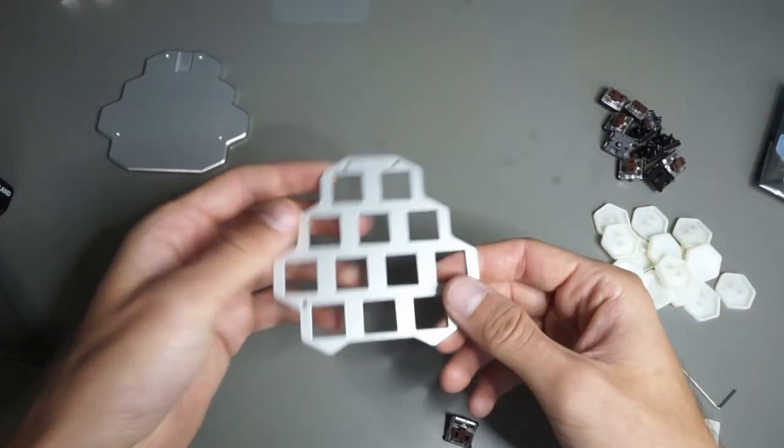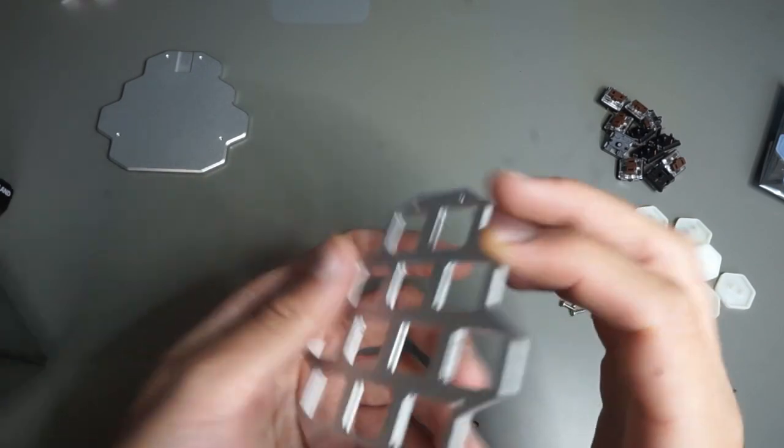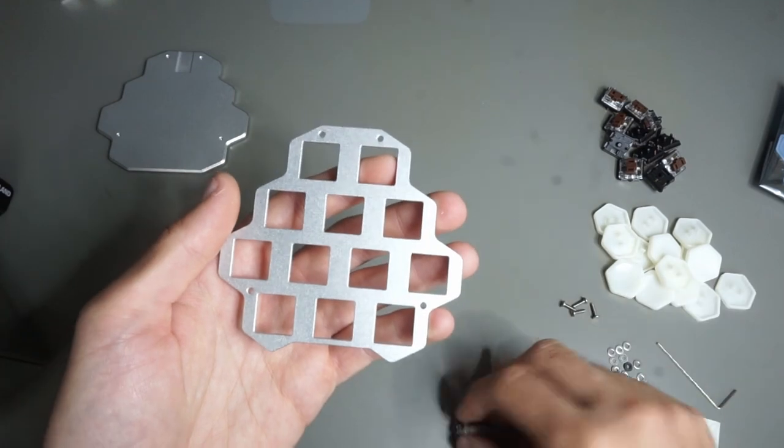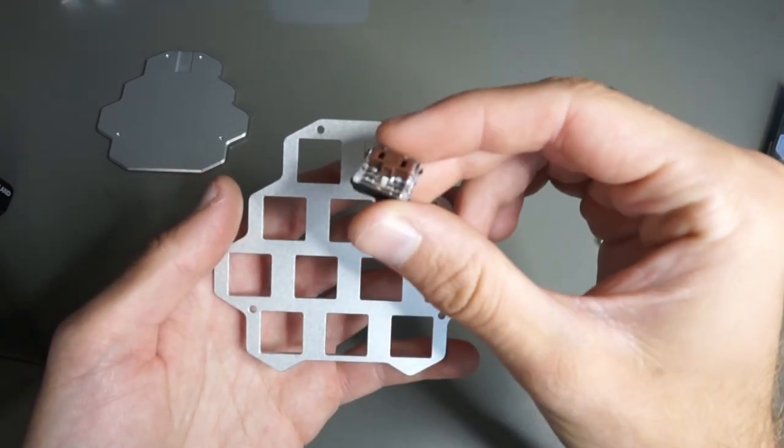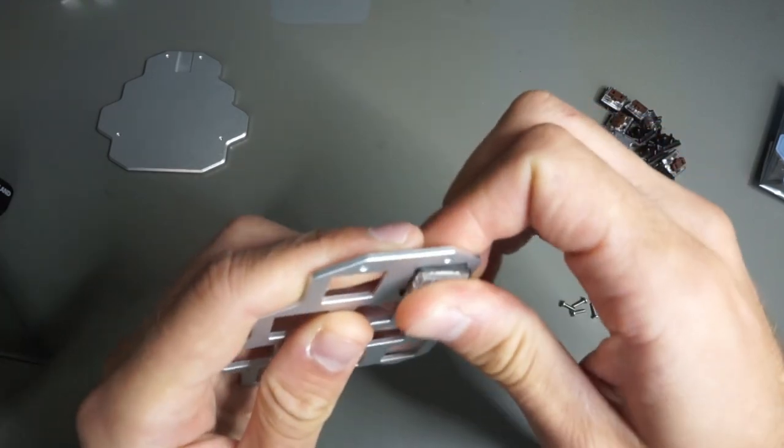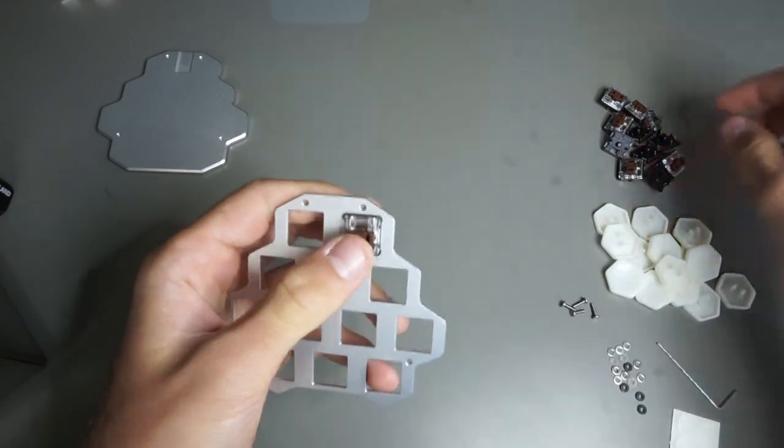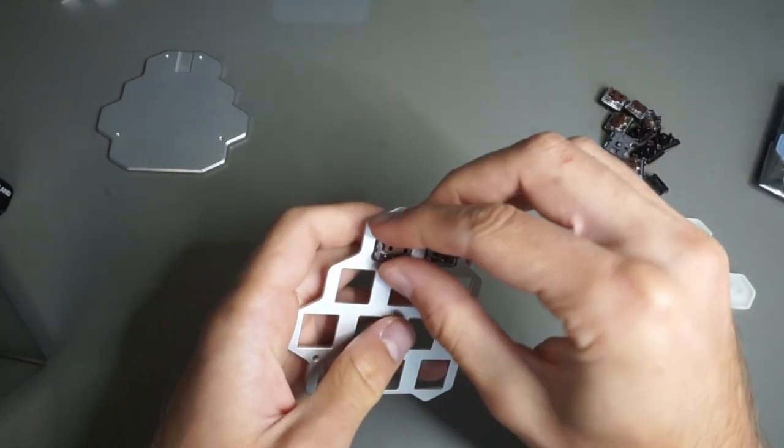Then for the actual assembly, the first step is to start with the top plate and figure out which side is up. I should be putting the switches in from the side that doesn't have little relief cuts, so they can snap into place. Also make sure to put in the switches in the right orientation. The T-shaped stem should be in this upright position.